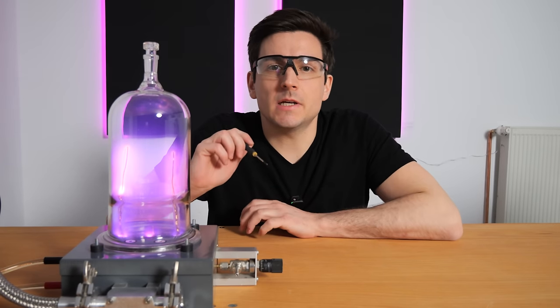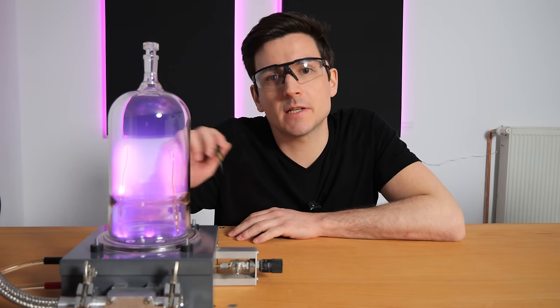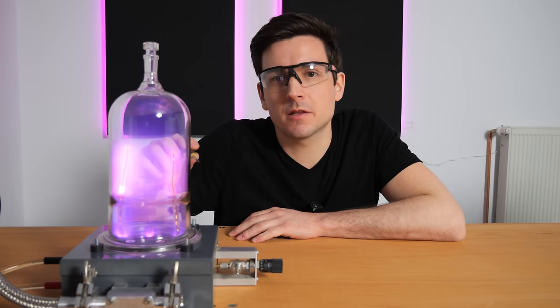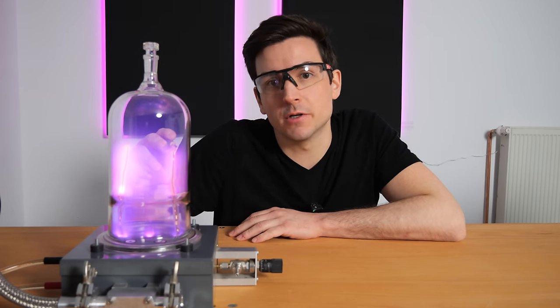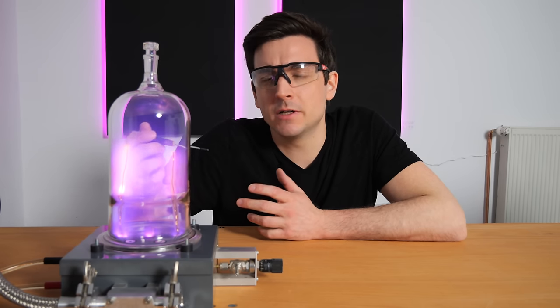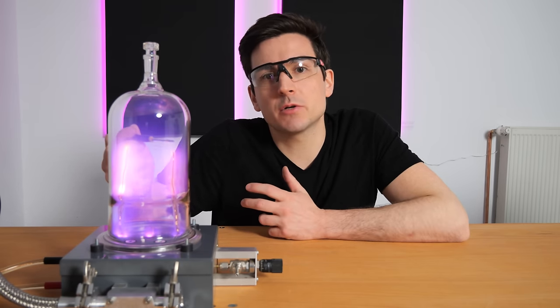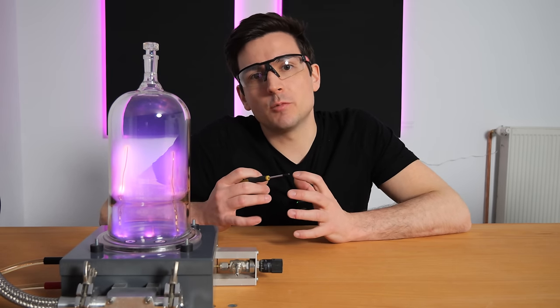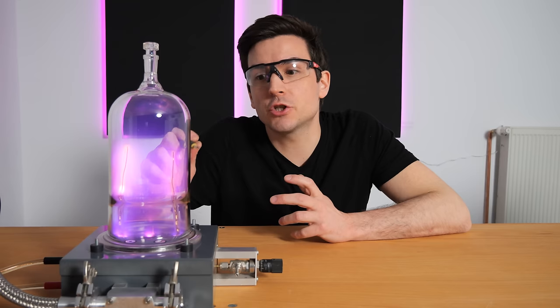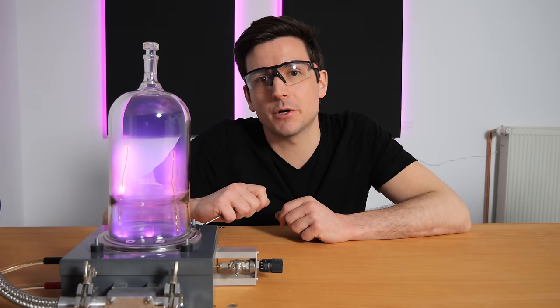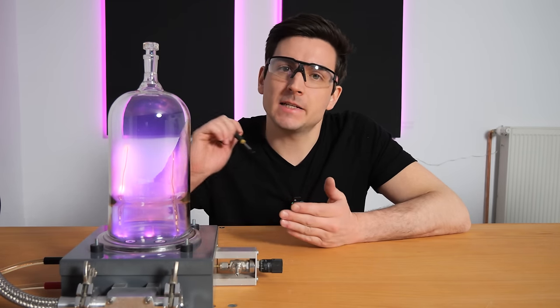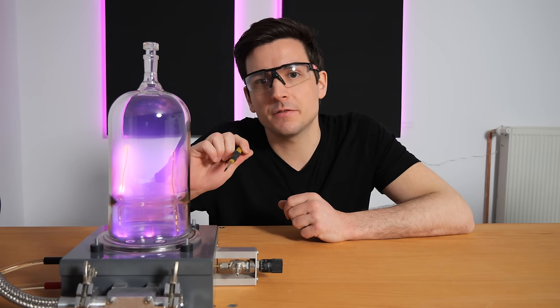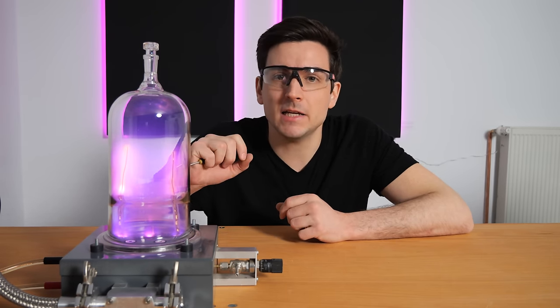I have copper electrodes on either side of the vacuum chamber and I will connect a high voltage power supply to these electrodes. As you can see, as soon as I turn on the power supply, a plasma is forming inside the chamber. What is happening here is that electrons are hitting the residual gas molecules in the chamber, in this case mostly nitrogen, and ionize them. Those ionized gas particles are called plasma.